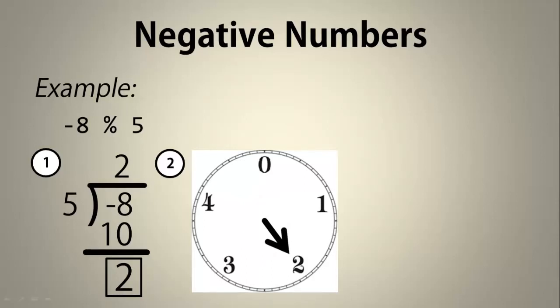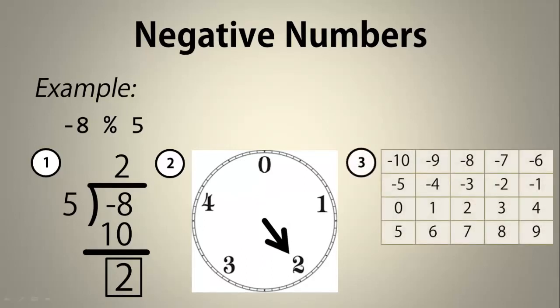Our last method is with the table, and this time we have 5 columns. This time we need to fill in the numbers before 0 because we need to find negative 8. Our answer will be greater than or equal to 0 and less than 5 in this row, so we see again that negative 8 modulo 5 is 2.